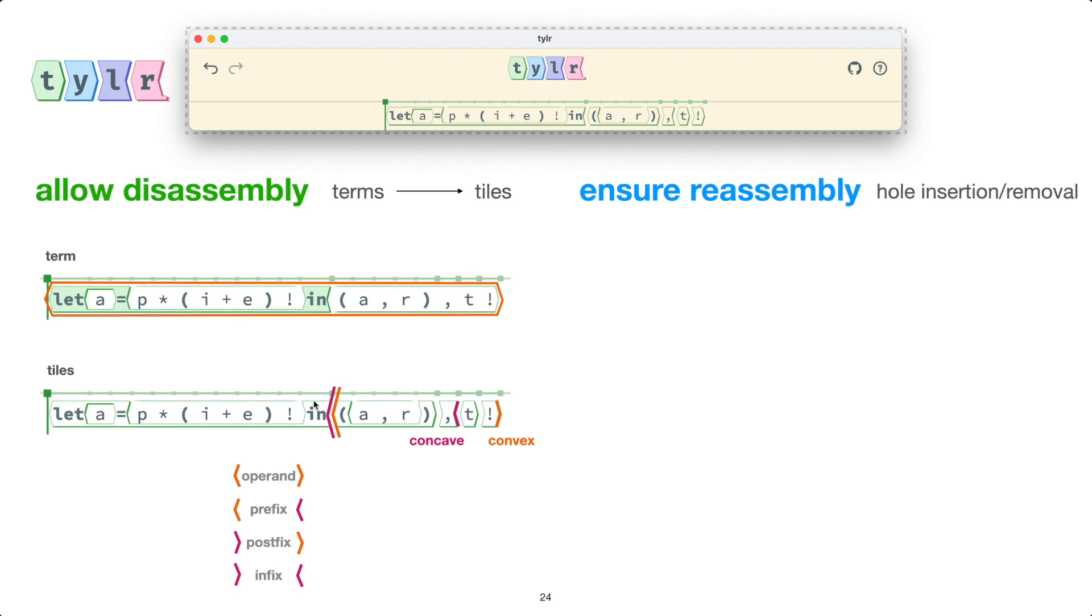And this involves inserting and removing these special tiles called holes. So for example, I'm going to extend this pi expression here with times two. Now notice as I inserted that times tile, that Tyler automatically inserted this hole to keep the convex shape. And then when I typed two, this essentially fills that hole we just inserted.